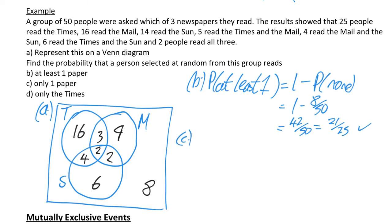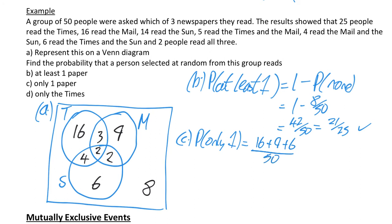For part C, it asks for only one paper. Only one would be: 16 for Times only, 9 for Mail only, and 6 for Sun only. So you've got 16 plus 9 plus 6, all out of 50. When you do that you get 31 out of 50, which can't cancel down.